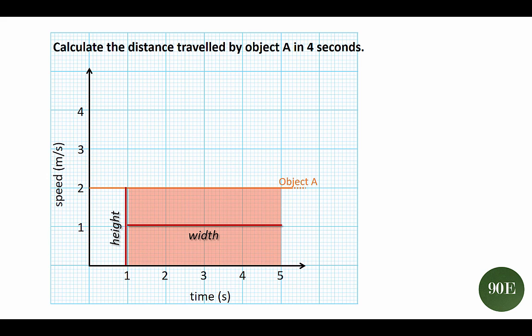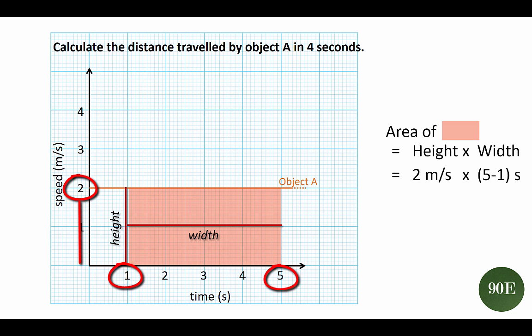The area of a rectangle is calculated by multiplying its height by its width. So that's 2 meters per second, multiplied by its width, which is 5 minus 1 second. That is, 2 meters per second, multiplied by 4 seconds, and once again, that equals 8 meters.